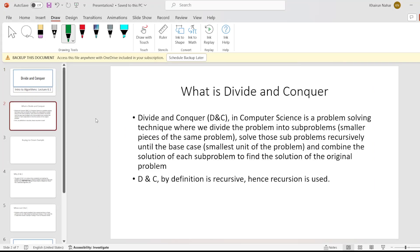First, I am going to start with the question: What is Divide and Conquer? Divide and Conquer, in short D&C, in computer science, is a problem-solving technique where we divide the problem into sub-problems. Sub-problems meaning smaller pieces of the same problem. And then solve those sub-problems recursively until the base case.